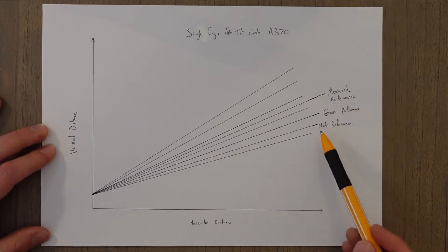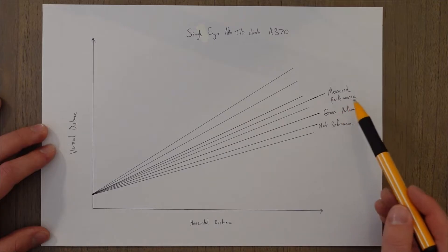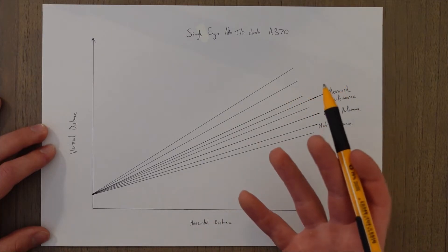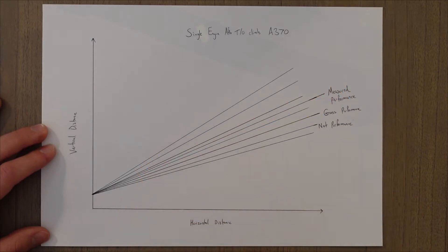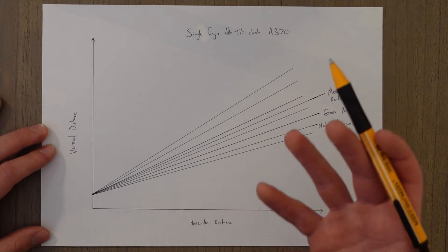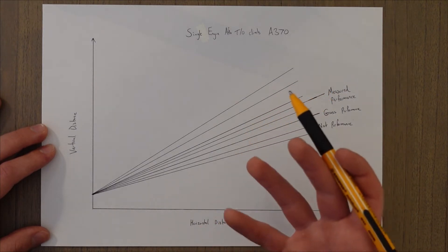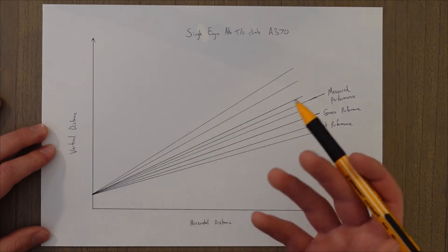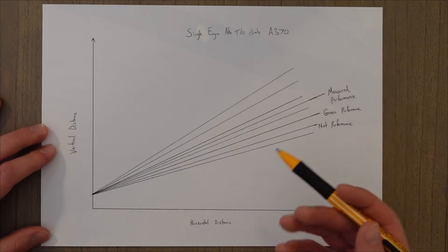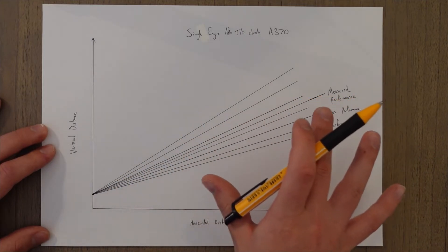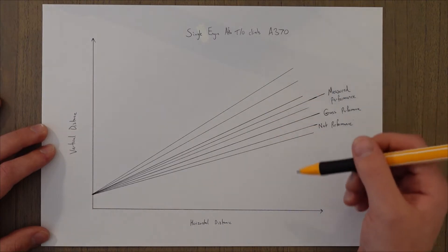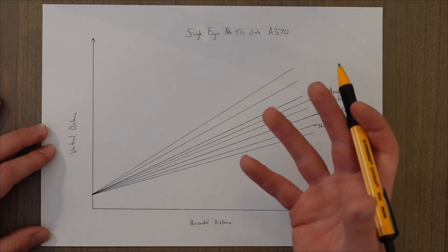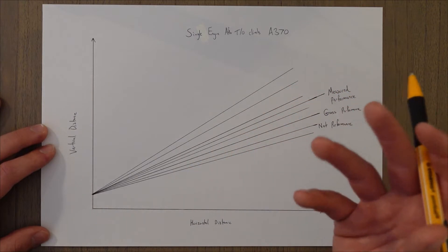We've got measured performance, gross performance, and net performance. Starting off with measured performance, that's the performance data that the aircraft has achieved before it enters commercial service, and it's physically measured during a flight test by test pilots. All of the phases of flight are covered multiple times and an average is taken to show us the average measured performance for different characteristics.